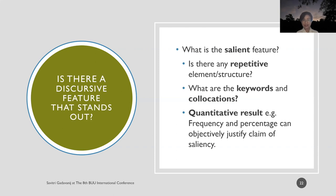The fourth question: is there a discursive feature that stands out? To analyze discourse, we must identify salient features — those that are distinctive and stand out. Previously we used intuition to argue for saliency, but now quantitative data is used to back up our judgment. We can look for repetitive elements in a structure — the more repeated, the more salient the feature. We can look for keywords, collocations, and their frequency. Whatever is called salient can be verified with quantitative results. The more a text emphasizes one thing, the more it indicates that thing is foremost in the speaker's mind.